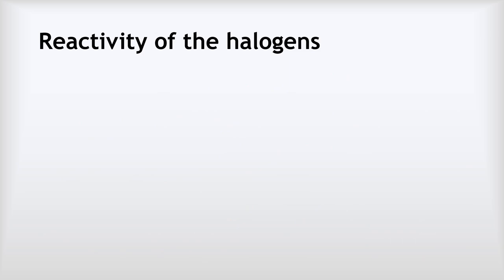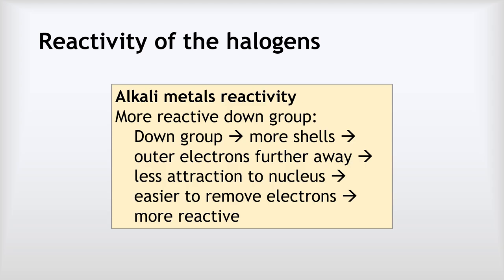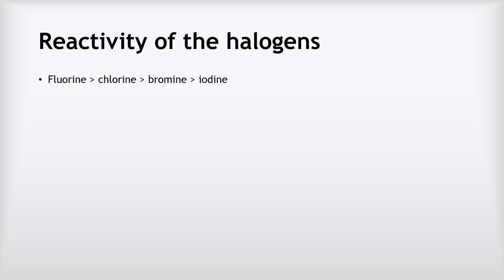What about the reactivity of the halogens? It's worth reminding ourselves about the alkali metals: as you go down that group, they get more reactive because more electron shells means the outer electrons are further from the nucleus, less attracted, and easier to remove. With the halogens we'll see that same logic about distance, but it will have the opposite effect on reactivity because halogens gain electrons rather than lose them.